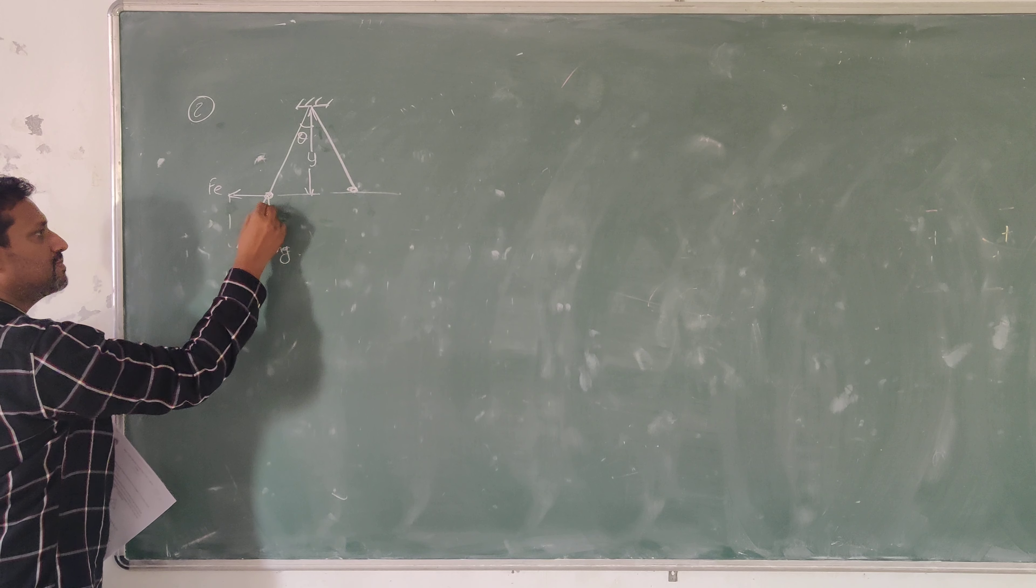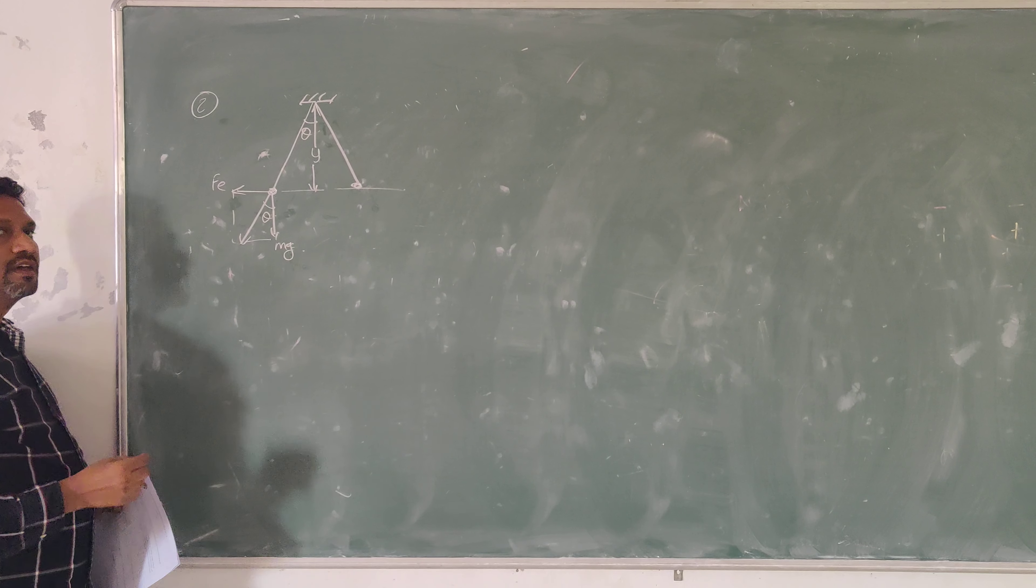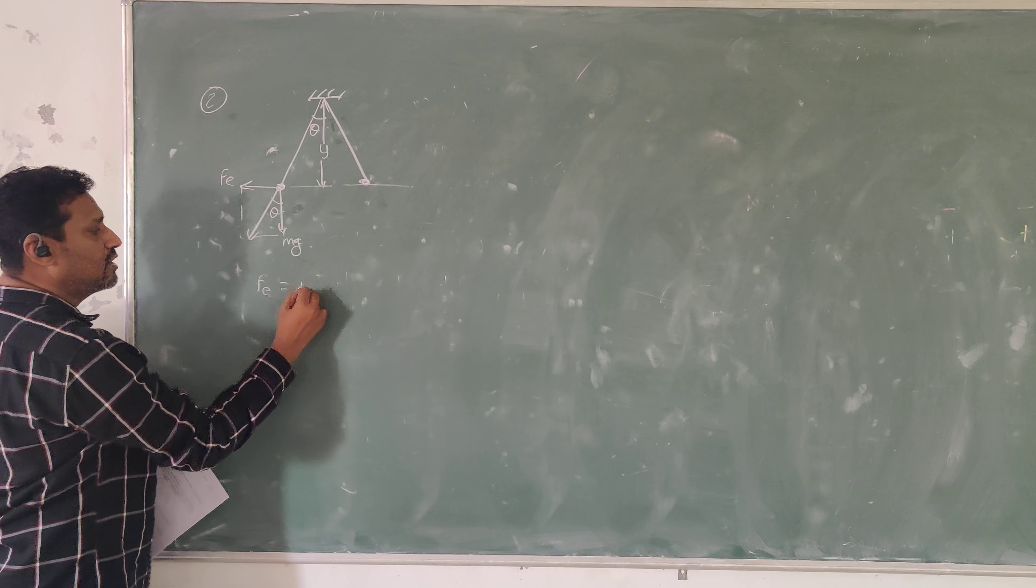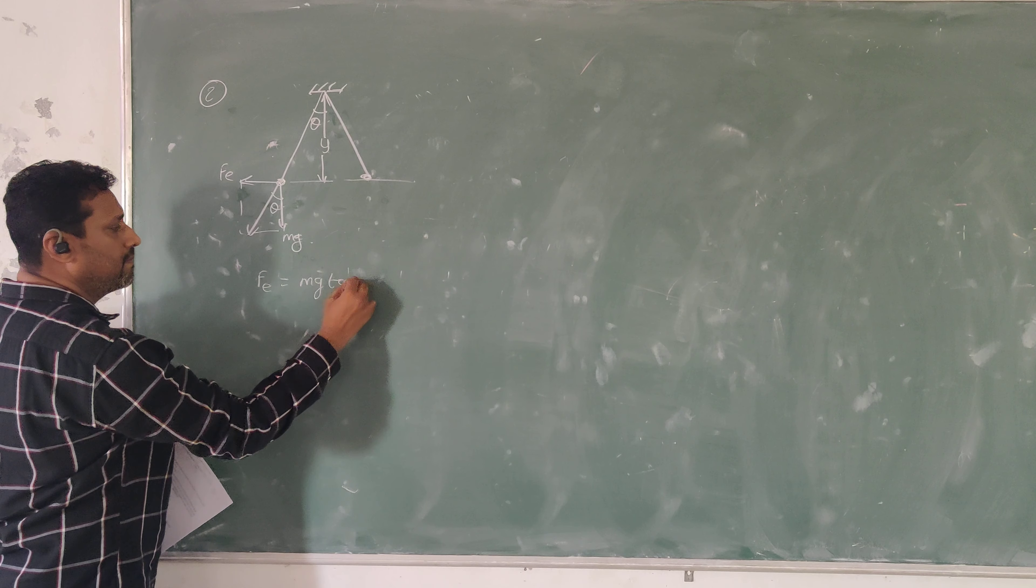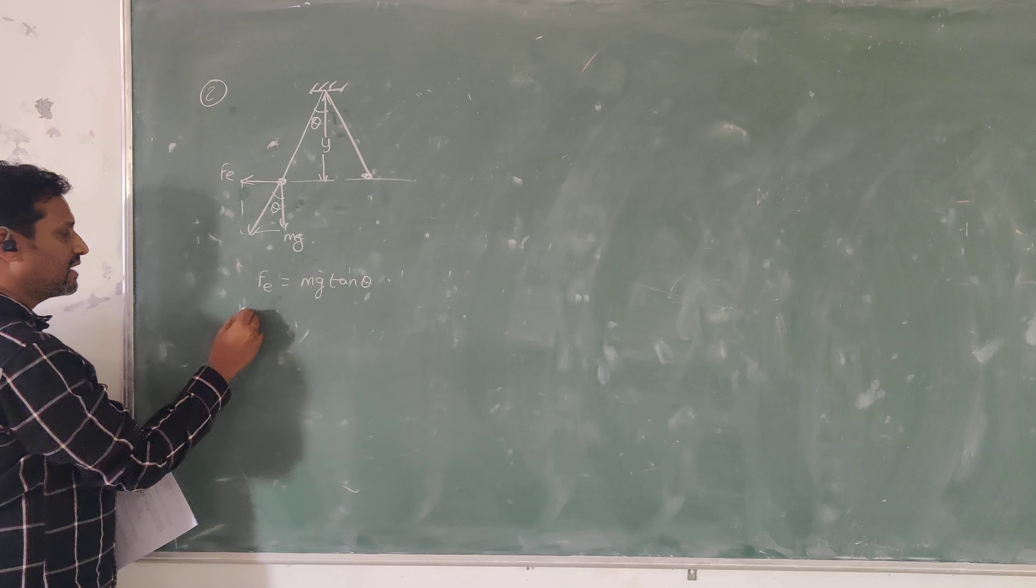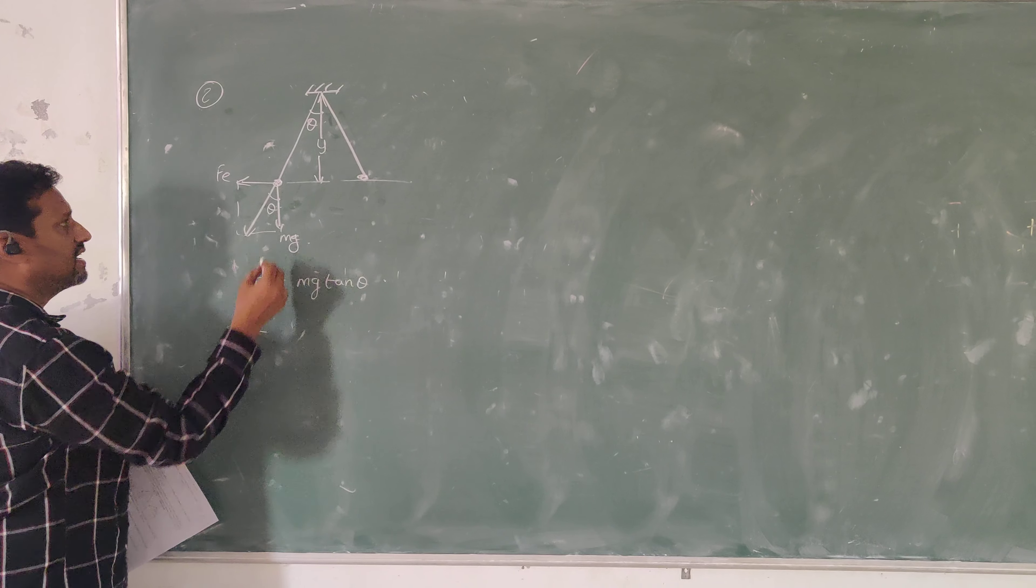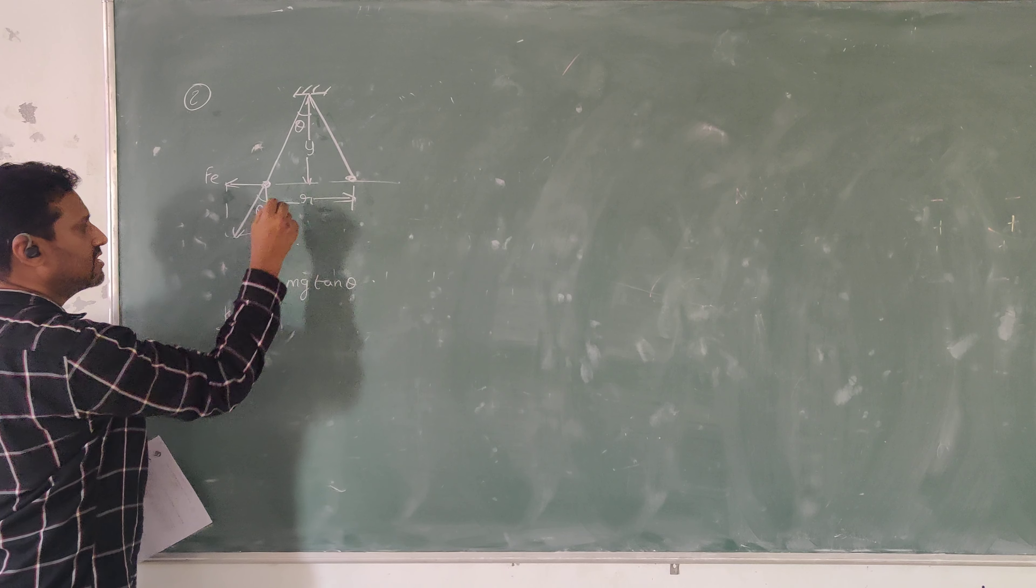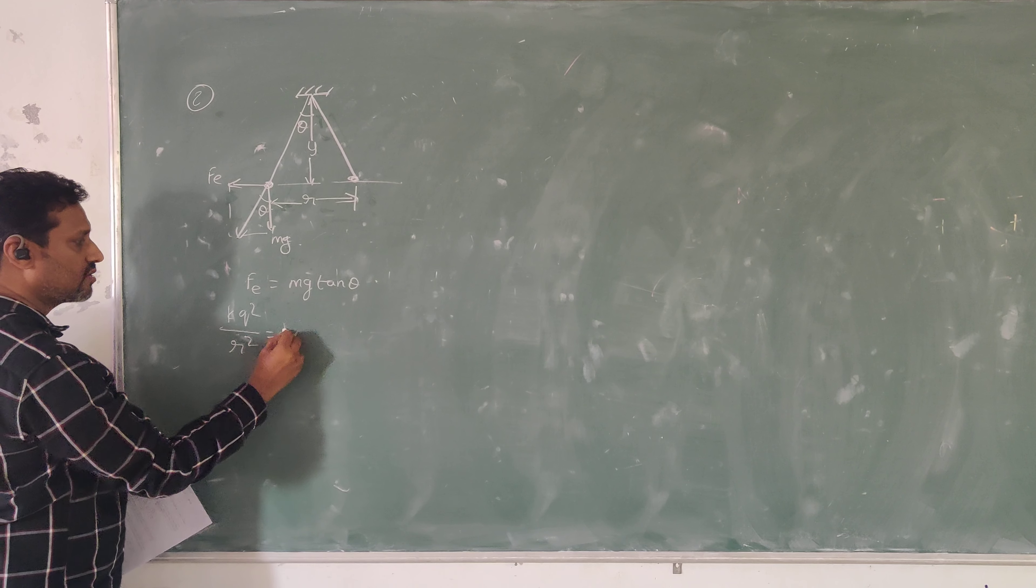And Fe is nothing but kq squared divided by r squared. The initial separation between the charges is given, so r squared equals mg tan theta. From this, we can establish the relationship between y and r.